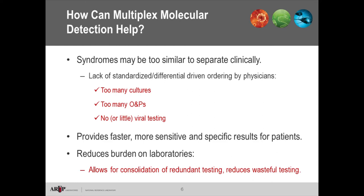Multiplex molecular tests can also give faster turnaround time. Analytically, they're more sensitive and more specific. They can reduce the burden on laboratories — less hands-on work and reduced complexity — and may allow you to consolidate redundant tests like giardia antigen and O&P for giardia, potentially eliminating them altogether.